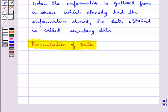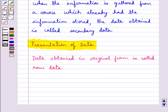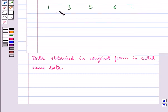As soon as the work related to collection of data is over, the investigator has to find ways to present them in a form which is meaningful, easily understood, and gives its main features at a glance. Data obtained in original form is called raw data or ungrouped data.